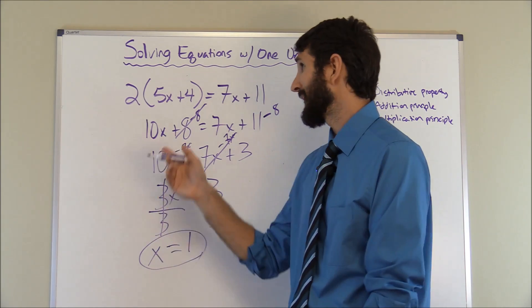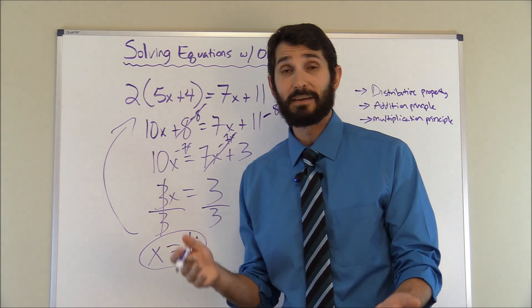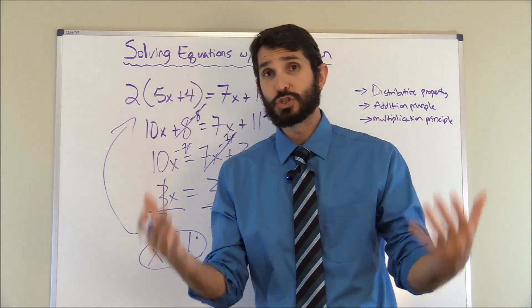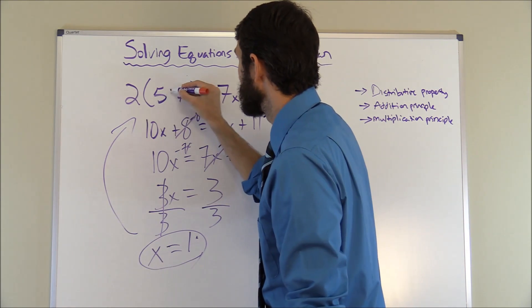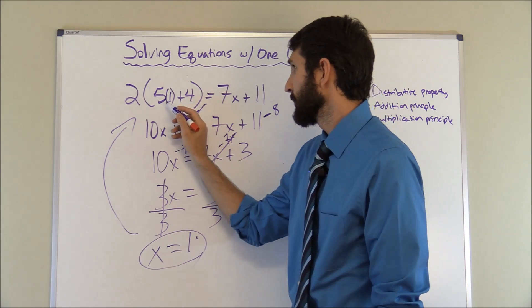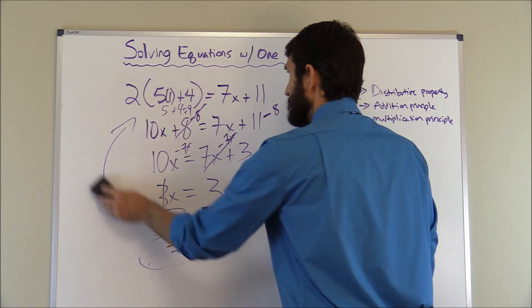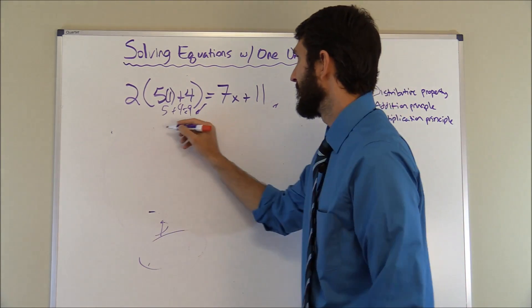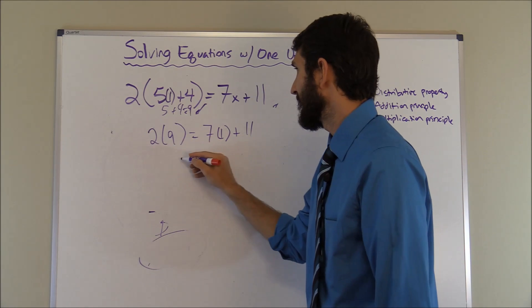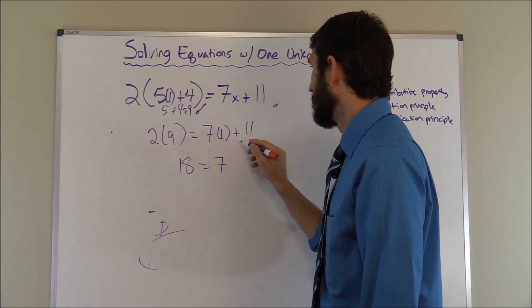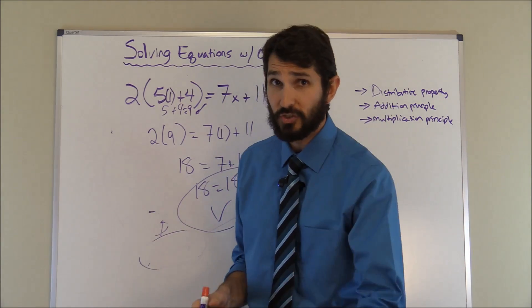The cool part about these equations is that you can take the final answer and substitute it back into the original equation to check your work. Let's substitute one where the X is: inside the parentheses, five times one is five, plus four equals nine. So we get two times nine equals seven times one plus eleven. Two times nine is eighteen, and seven plus eleven is also eighteen. So eighteen equals eighteen — it checks out.